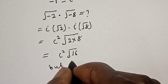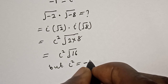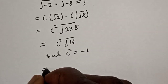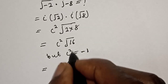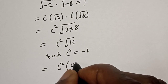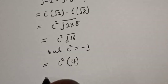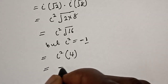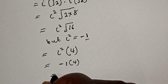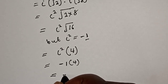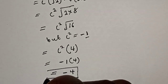But i squared is equal to minus 1. So this is equal to i squared multiplied by square root of 16, that is 4. Since i squared equals minus 1, this becomes minus 1 multiplied by 4, which is equal to minus 4. And that is our final answer.